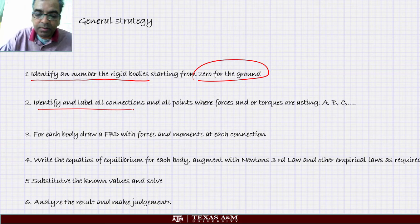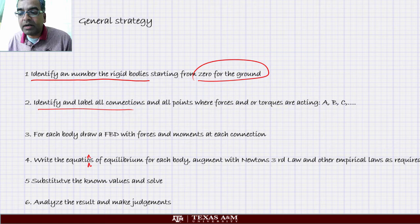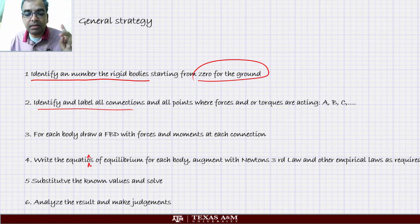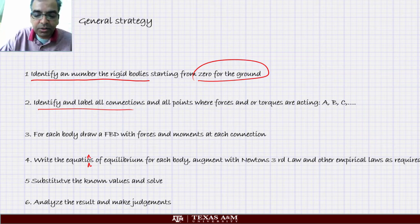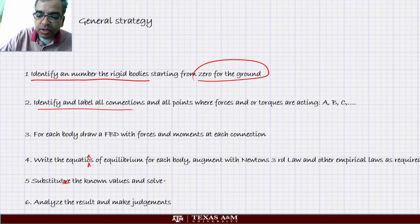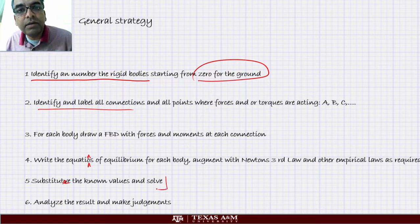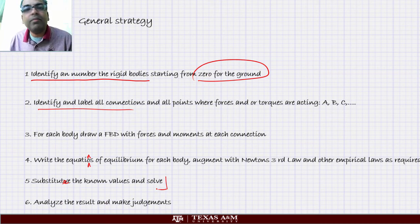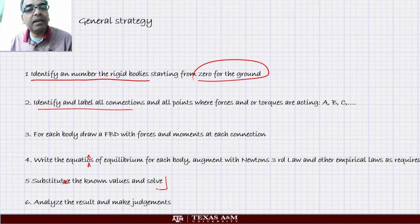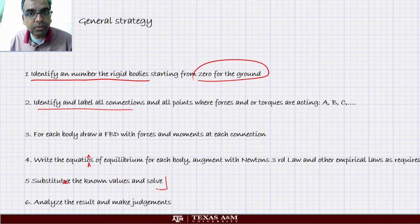Then we draw a free body diagram for each rigid body with forces and moments at each connection. Then we write the equations of equilibrium for the body and augment it with whatever conditions we want — Newton's third law and so on. The last step is substitute the known values and solve. This gives us a set of linear equations and if you have a decent calculator or Excel or MATLAB or even by hand you can do it pretty easily. Then analyze the result and see if you can make any decisions that you need to make.